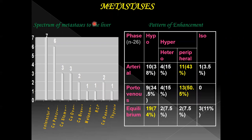The most common primary for liver metastasis was colorectal carcinoma, seen in seven patients. The next most common was CA pancreas, followed by CA stomach and ovary. Other primaries included breast, melanoma, RCC, and CA esophagus. The most common enhancement pattern in the arterial phase was peripheral enhancement, seen in 43% of cases. In the portal venous phase, peripheral enhancement was again most common, and in the equilibrium phase, hypo-enhancement was seen in 74% of patients.